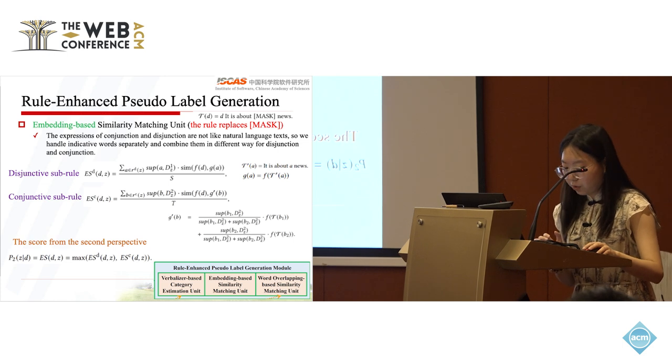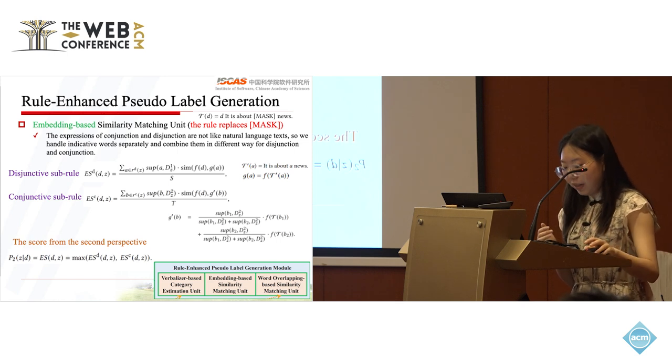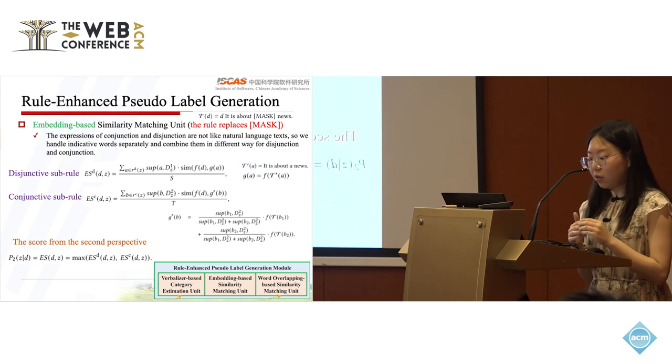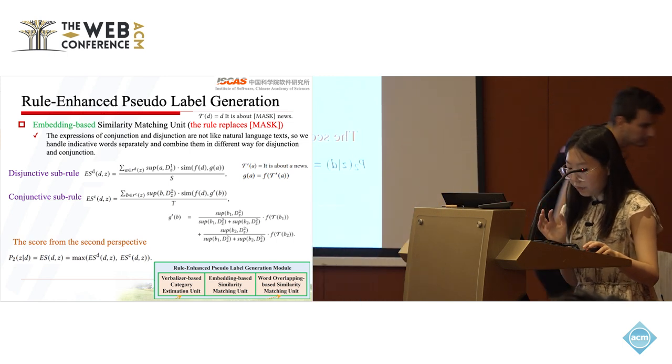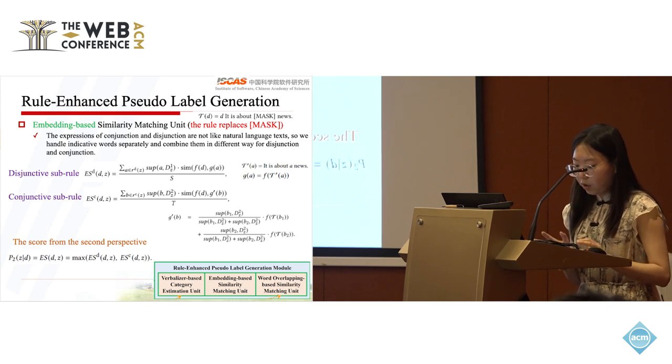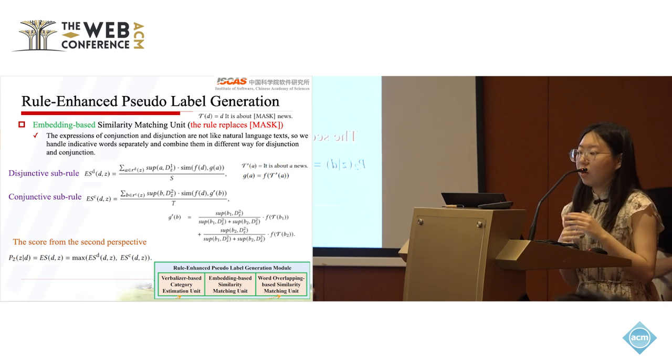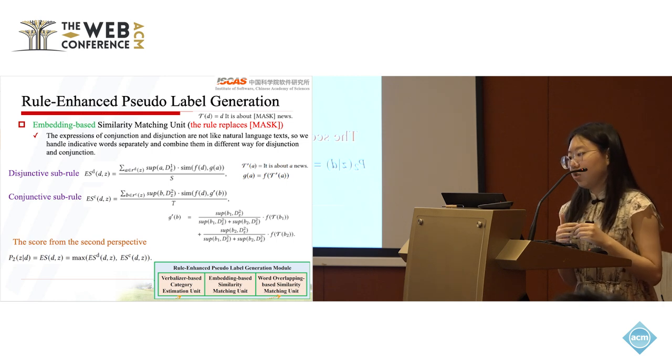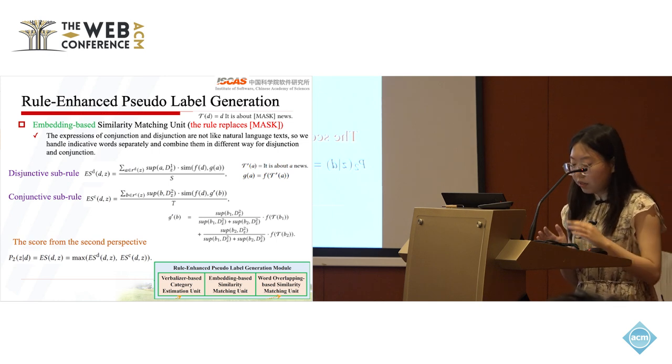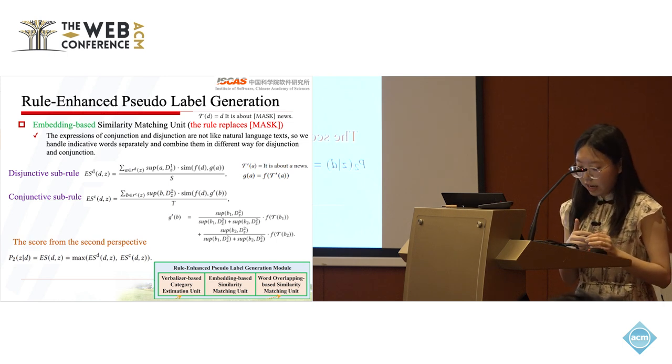On the other hand, for the last two units, we use the rule at the text level as the document. The whole rule is injected into the template to derive text. Then, the classification is based on the similarity between the rule text and the document, realized in two views: global embedding similarity and local word overlapping. In the matching unit, we use the rule to replace the mask position in the template. Since the expression of conjunction and disjunction are not like natural language text, we handle the injective words separately and combine them in different ways. For disjunctive sub-rules, we can directly calculate the similarity between the embedding of the document and the embedding of the rule text.